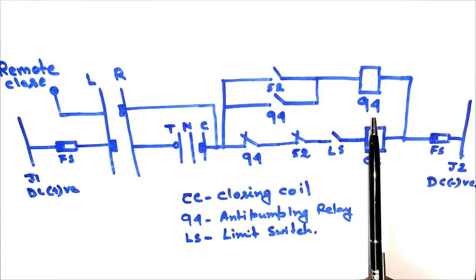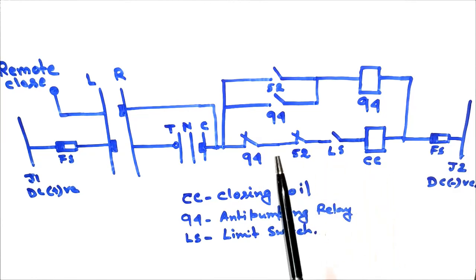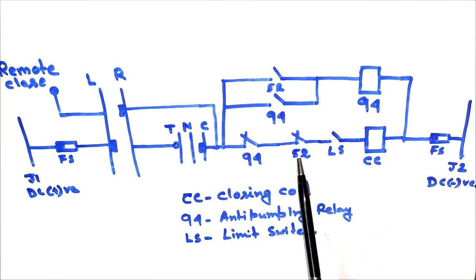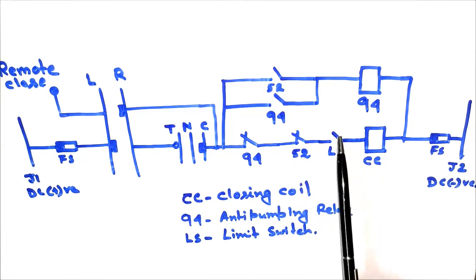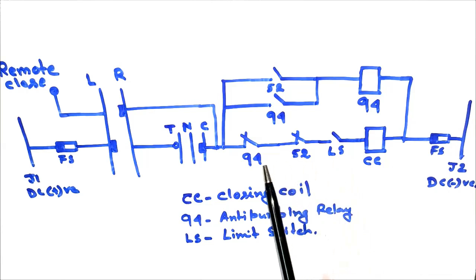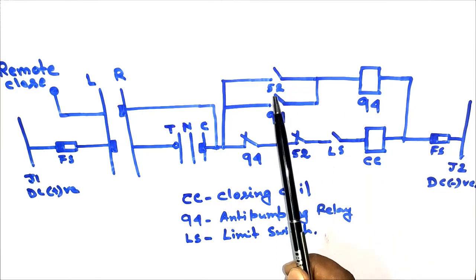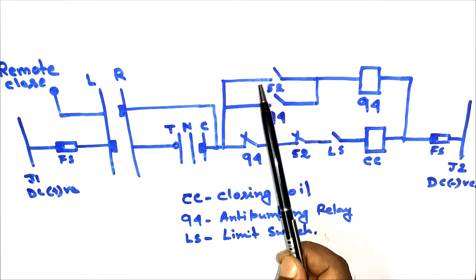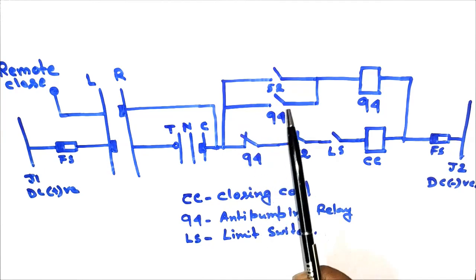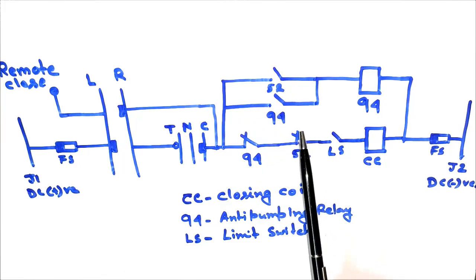In ANSI code, the anti-pumping relay is represented as 94. We have a normally closed contact in series with the closing coil circuit, and we have a breaker auxiliary normally closed contact in series with the closing coil circuit, and another contact which is the limit switch contact — a normally open contact that, when the spring is in a charged condition, will be in closed position. In series with the anti-pumping relay we have a breaker auxiliary normally open contact, and in parallel with this contact we have the anti-pumping relay contact, which is a normally open contact. All contacts are shown in the unenergized condition.